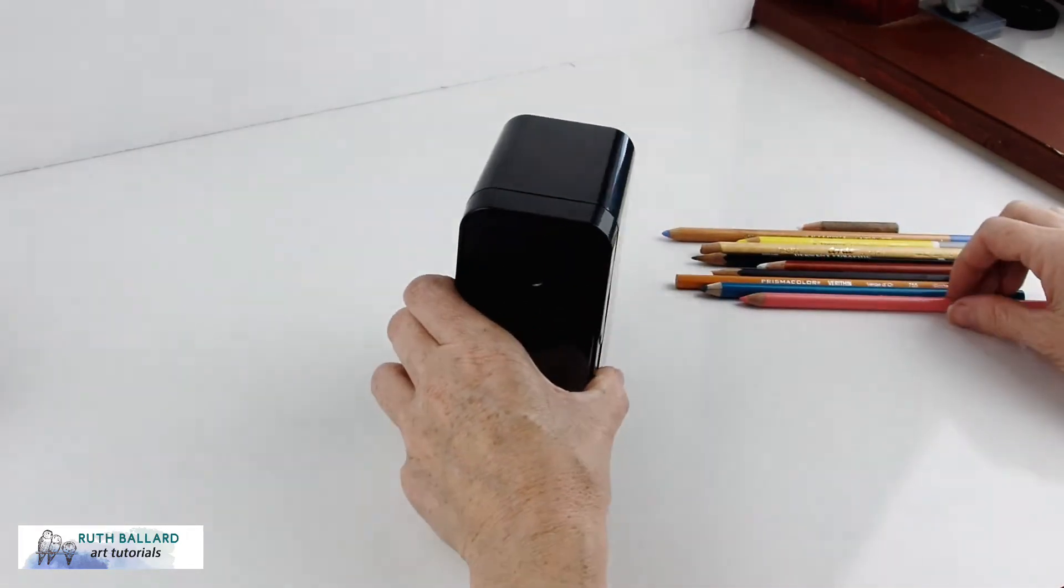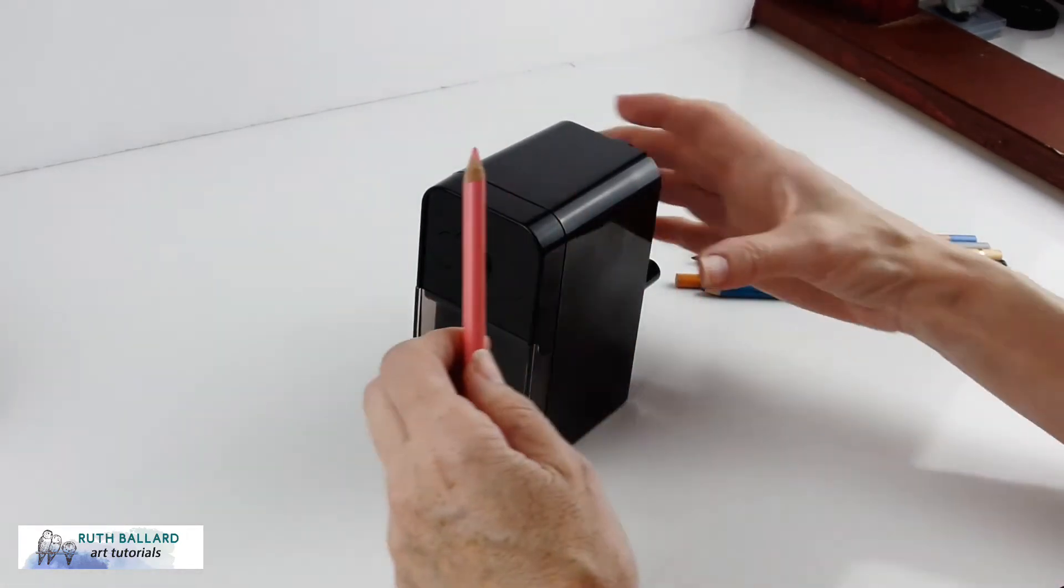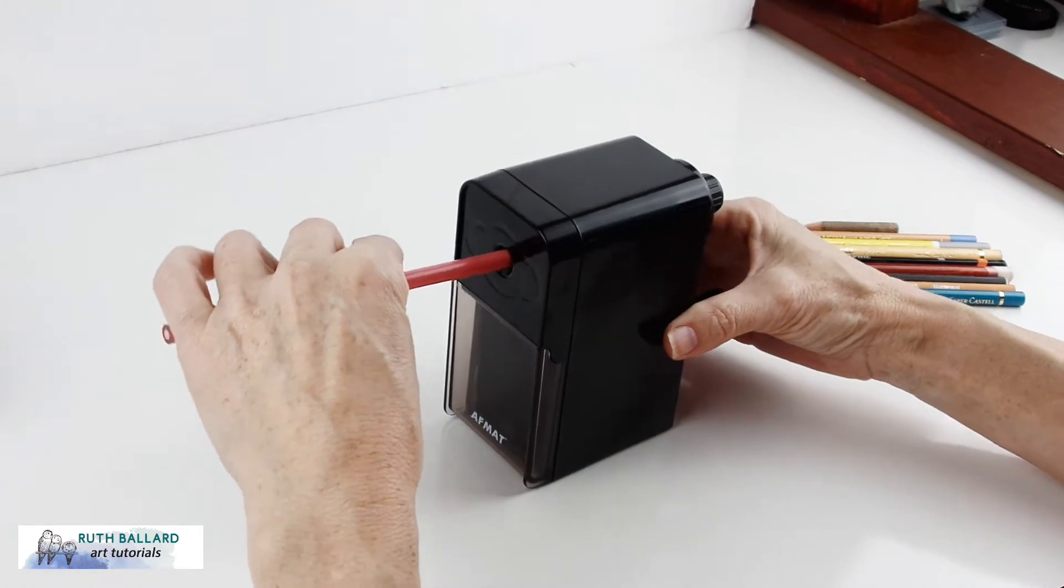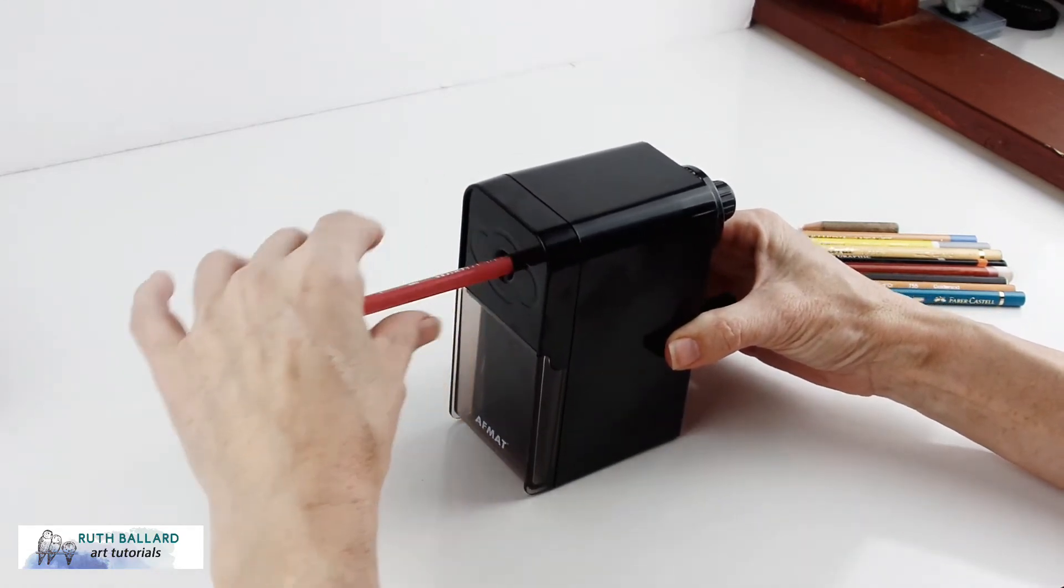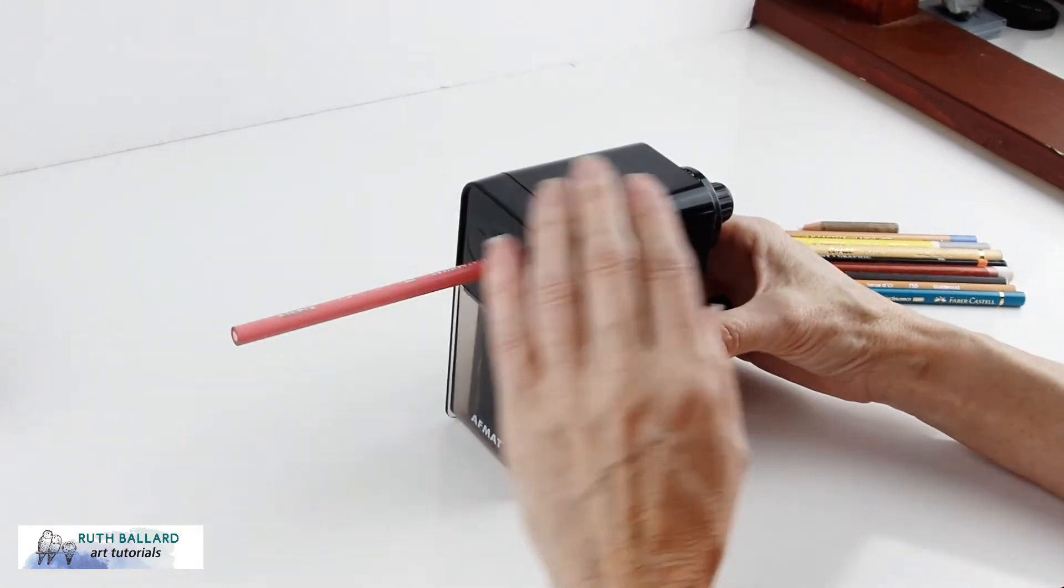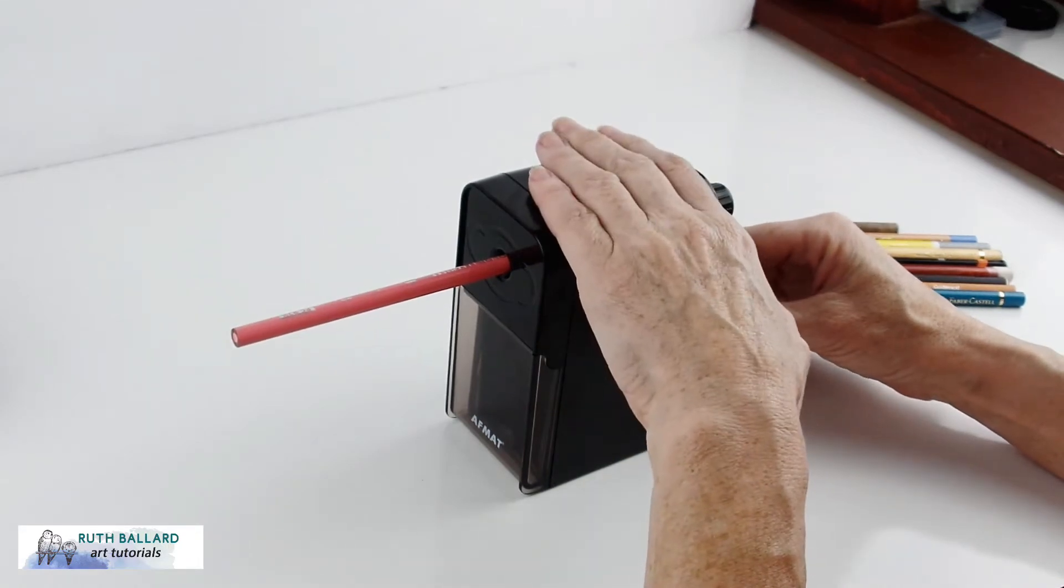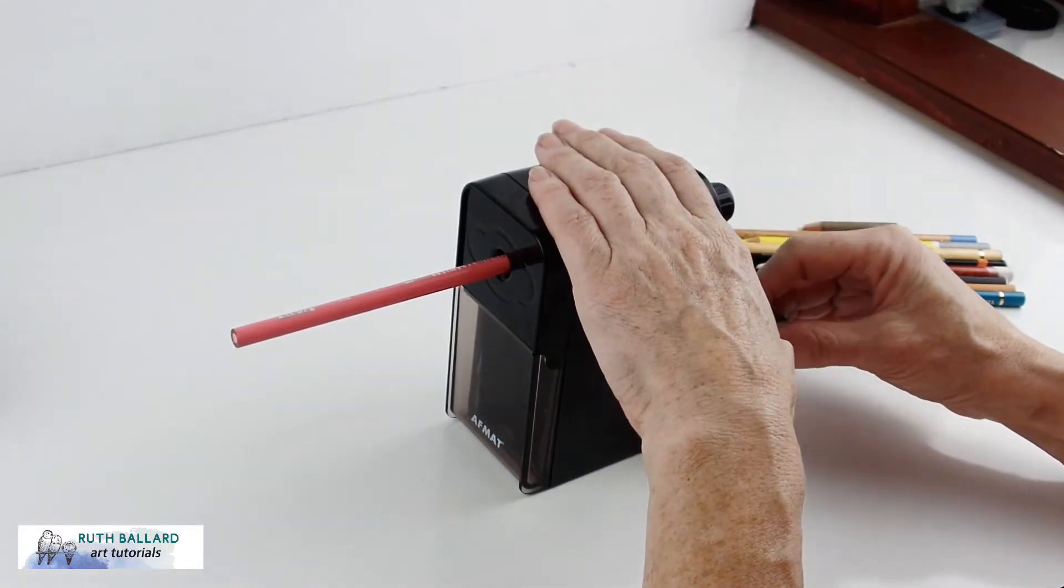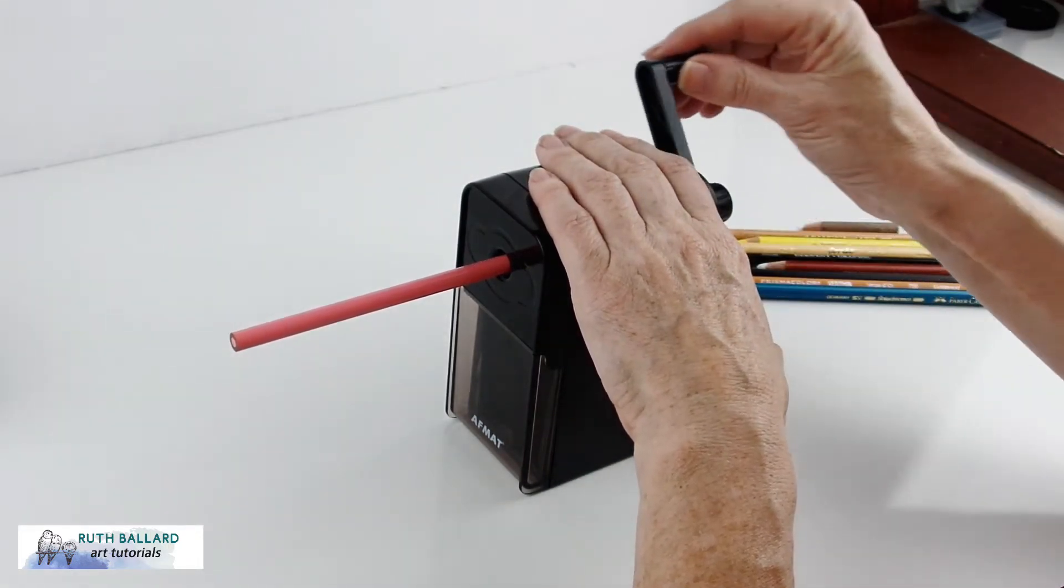So according to the instructions, what you do is very simple. I'm putting the Prismacolor one in. You put it in until it stops, then you hold the top and then you just turn the handle.